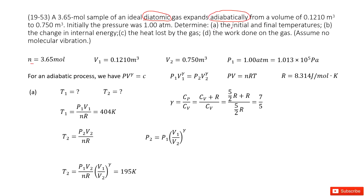The first question asks for the initial and final temperature. For the initial temperature, since the process is adiabatic, we use the ideal gas law PV = nRT. So T1 = P1·V1 / (n·R). P1 is given, V1 is given, n is given, and R is a constant — so we input these quantities and get the answer.